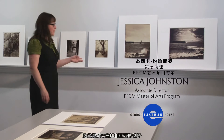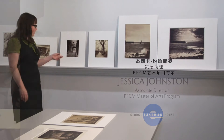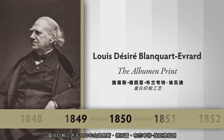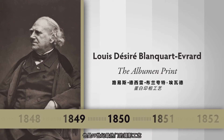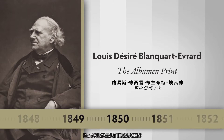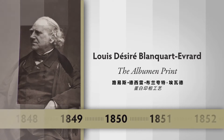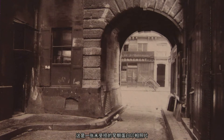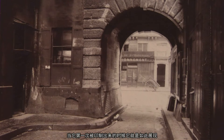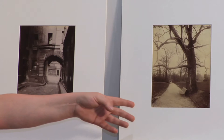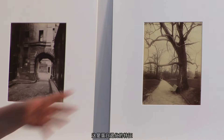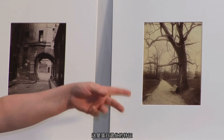These are examples of albumin prints. The albumin print was invented in 1850 by Louis-Desiree Blancart-Evrard and was the most popular photographic process in the 19th century. This is an example of a pristine albumin print, how it would have looked when it was first produced. This is an example of a faded yellowed albumin print, characteristic of albumin deterioration.